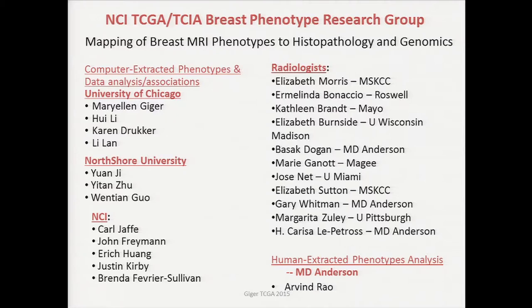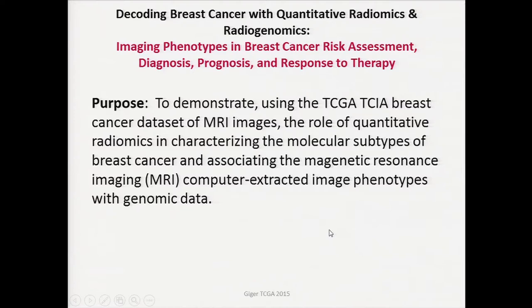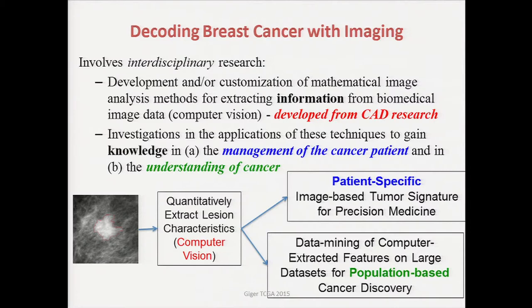This is the breast phenotype research group. It includes various image analysis and genomic folks, NCI, as well as radiologists from around the country that have worked with these images. Our purpose is to demonstrate using this dataset the role of quantitative radiomics in characterizing the molecular subtypes of breast cancer and associating that with genomic data. We come from a history of research in computer-aided diagnosis where we've used computer vision techniques to extract information, and then based on clinical information, create the knowledge to aid in diagnosis or prognosis of the patient, and now using it in data mining.